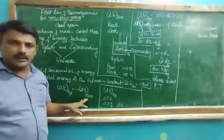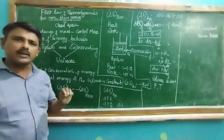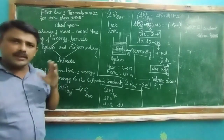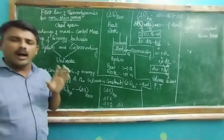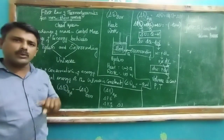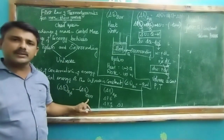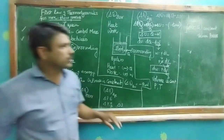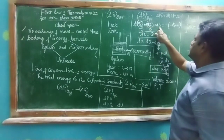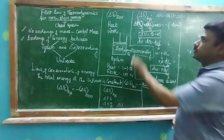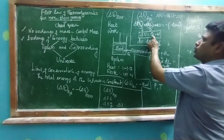Changes in total energy of the surrounding occur only through exchange of heat and work with the system. Based on the surrounding, the heat transferred from surrounding to system is a negative quantity (−Q), and work done by the surrounding on the system is a positive quantity (+W). Hence, changes in total energy of the surrounding equals −Q + W. Equating the two sides: changes in PE + KE + internal energy equal −(−Q + W), giving ΔU = Q − W.